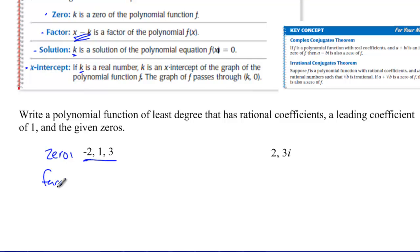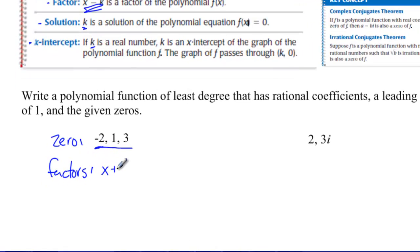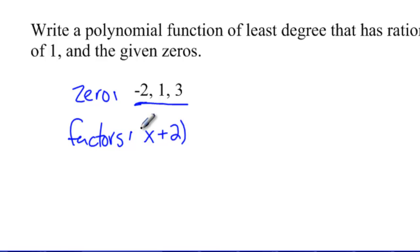We know that our factors are, if negative two is a zero, x plus two is the factor. If I know one is a zero, then x minus one is a factor, and if I know three is a zero, then I know that x minus three is a factor.